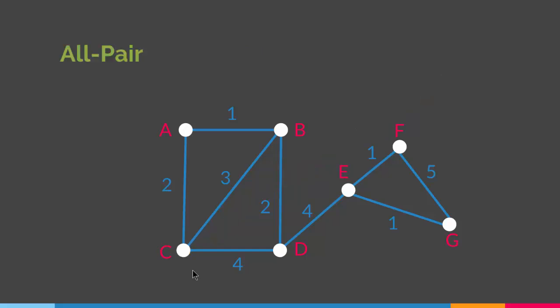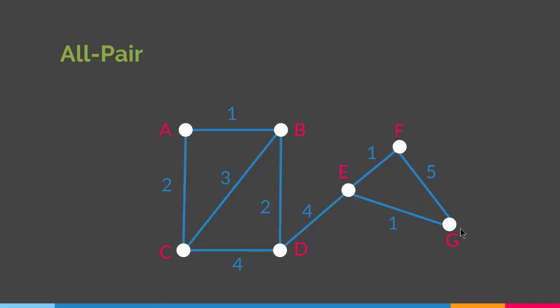Finally, we have the all pairs shortest path problem, which is finding the shortest path between all the vertices. For example, find the shortest path between A and C, A and B, A and D, A and E, A and F, and A and G. Then between B and C, B and A, B and D, B and E, B and F, B and G. Then D and B, D and C, D and A, D and E, D and F, D and G, and so forth, until you find the shortest path between all your vertices.